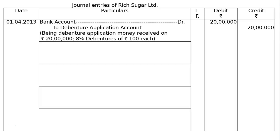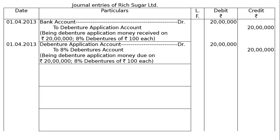The first entry: Bank account debited to Debenture Application account, being debenture application money received on Rs 20,08,000 debentures of Rs 100 each — Rs 20,00,000 in both debit and credit. The next entry: Debenture Application account debited to 8% Debentures account — Rs 20,00,000 in debit and credit — being debenture application money due on Rs 20,00,000 8% debentures of Rs 100 each.